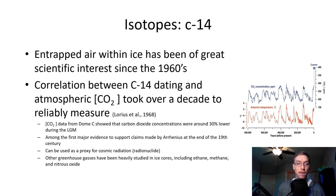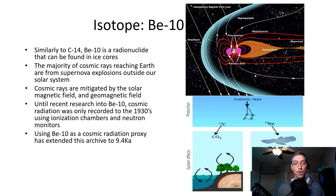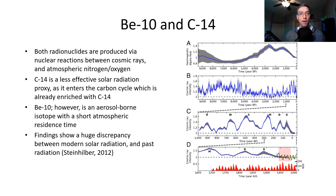The isotope beryllium-10: similar to carbon-14, beryllium-10 is a radionuclide found in ice cores. The majority of cosmic rays reaching Earth are from supernova explosions outside our solar system; these are mitigated by the solar magnetic field and geomagnetic field. Until recent research, cosmic radiation was only recorded back to the 1930s using ionization chambers and neutron monitors. Using beryllium-10 as a cosmic radiation proxy has extended this archive to 9,400 years in the past. Both Be-10 and C-14 are produced via nuclear reactions with cosmic rays and atmospheric nitrogen and oxygen.